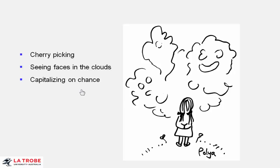Capitalizing on chance, chasing noise or seeing lumps in the randomness. These are all equivalent and alternative expressions for looking around in the data and seeing something, but maybe it's just a random fluctuation. So seeing faces in the clouds may be appealing, but don't fool yourself. It may just be randomness.